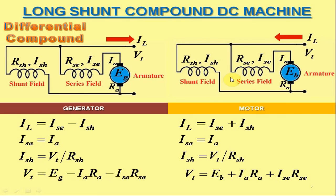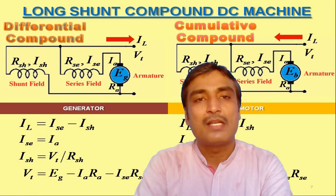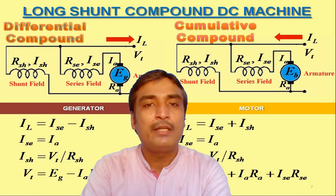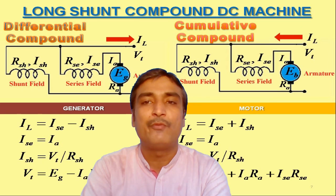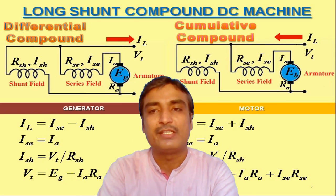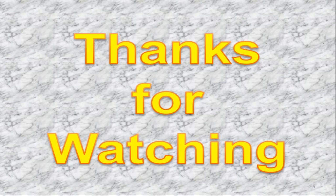So this is all about the current and voltage relationships in different sorts of DC machines. Thanks for watching. Goodbye.